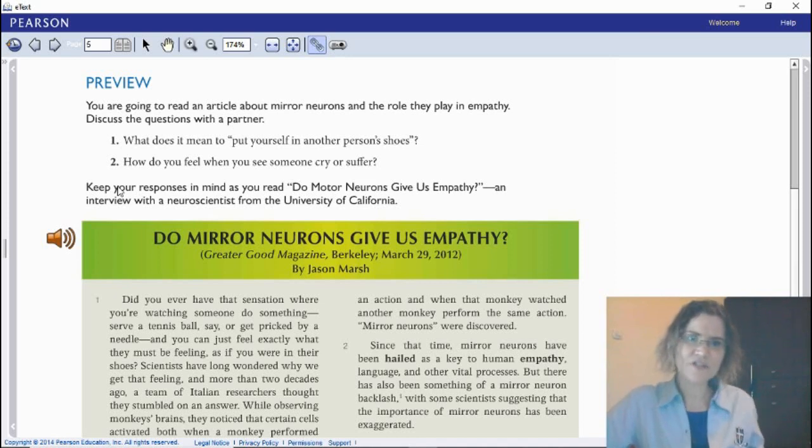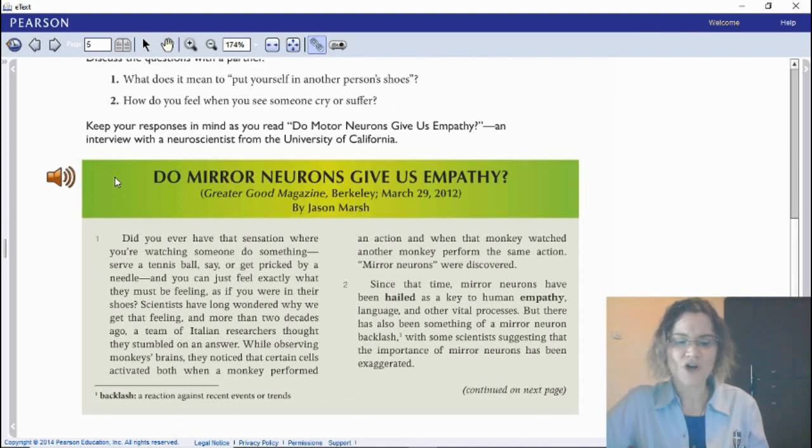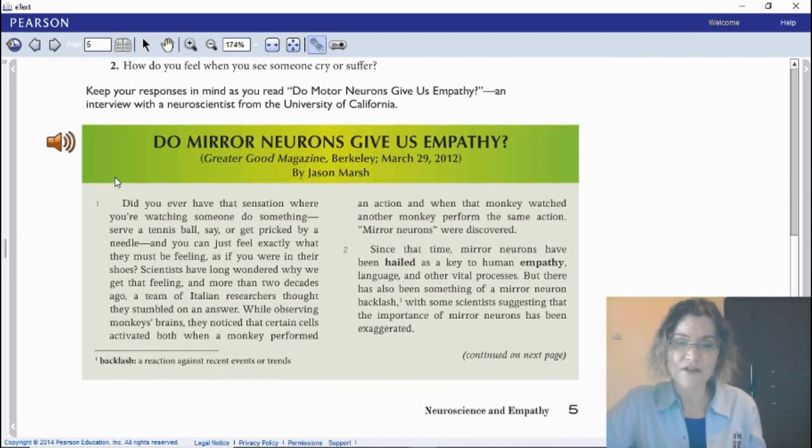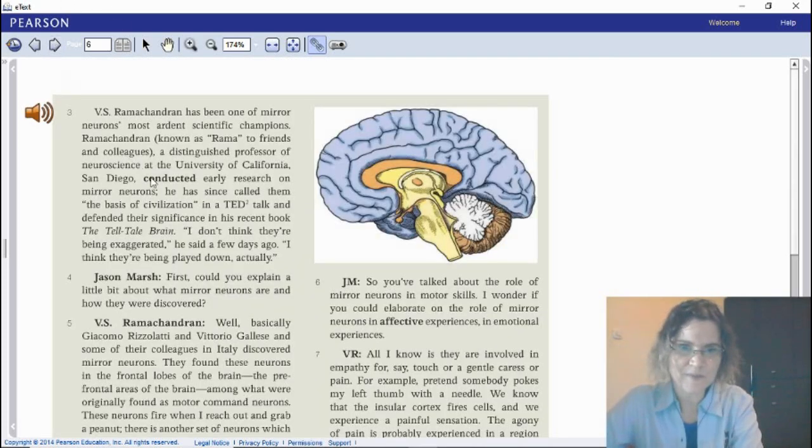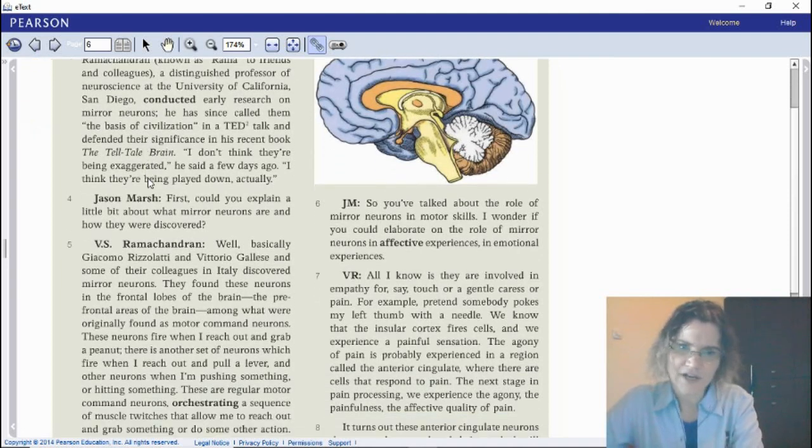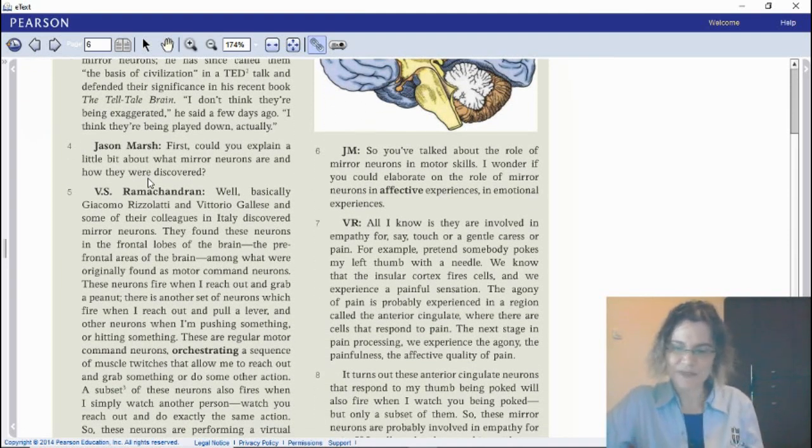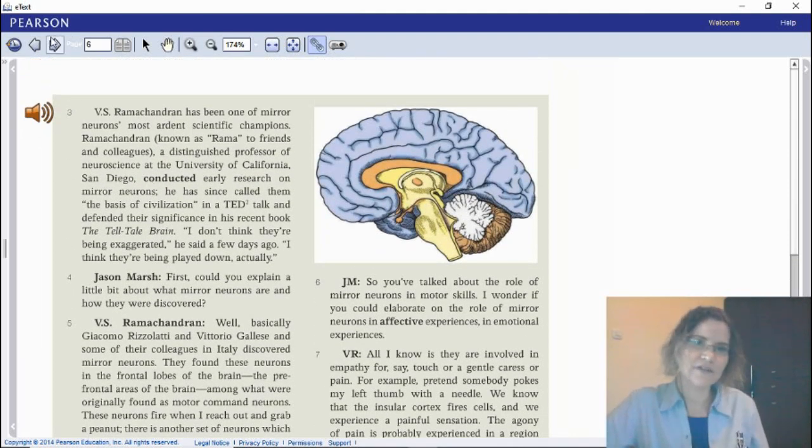If we look at this one, 'Do mirror neurons give us empathy?' This is an article, clearly, if you look at it. First off, you would think it is an article because of the paragraphs that you see. But if you look at the next page, you can see different people talking. So it might be a discussion. Don't get fooled.